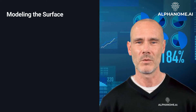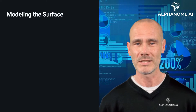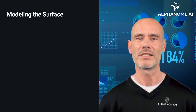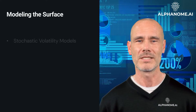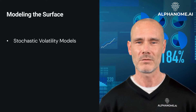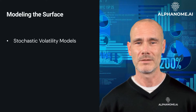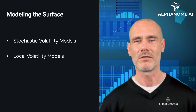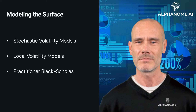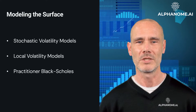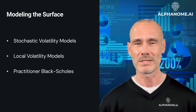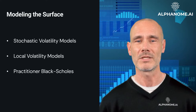While the classic Black-Scholes model assumes constant implied volatility across all strikes and expirations, more sophisticated option pricing models attempt to directly model the implied volatility surface itself. Popular models include stochastic volatility models, which allow the volatility parameter to evolve stochastically over time based on its own process, producing a richer volatility surface; local volatility models, which allow volatility to vary based on both the current asset price and time to expiration; and the Practitioner Black-Scholes model, which applies moneyness and time adjustments to the Black-Scholes formula to better match observed volatility skew and smile. Using appropriate volatility surface models is important for accurate pricing, hedge ratios, and risk management of options portfolios.